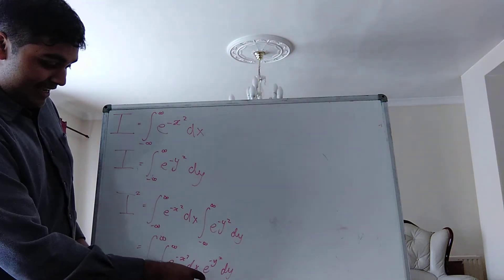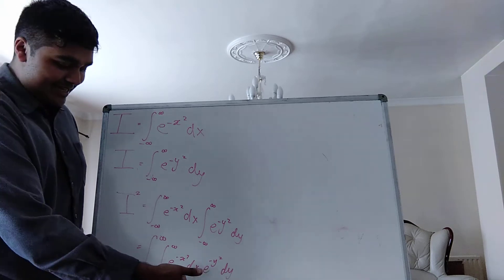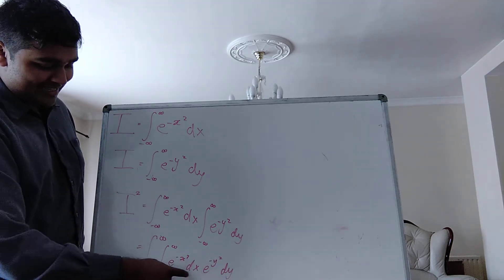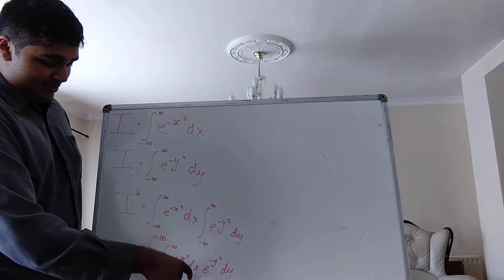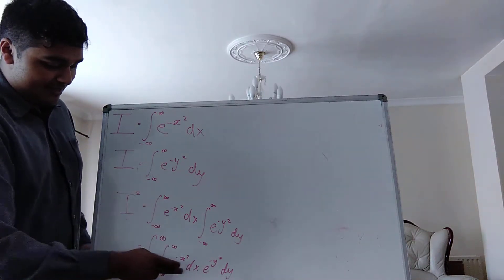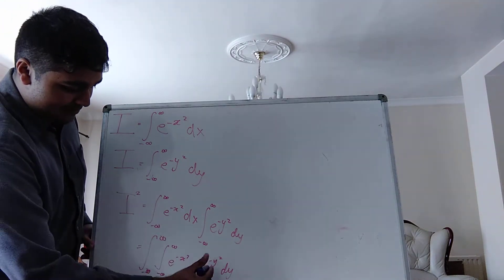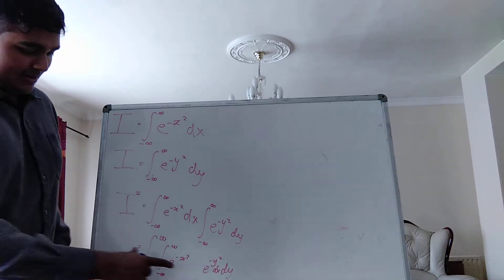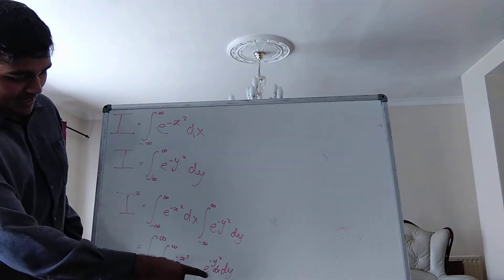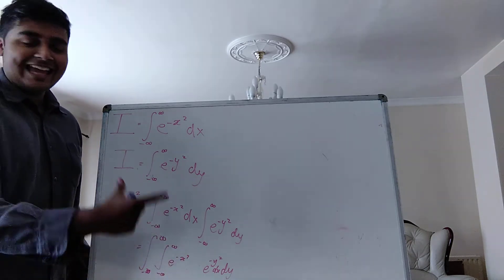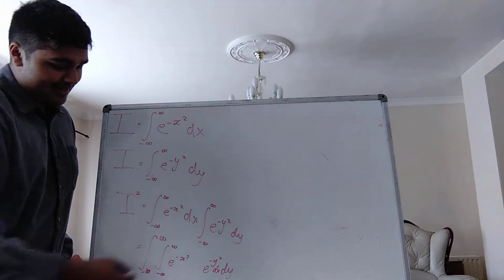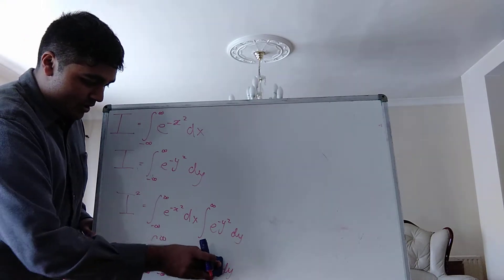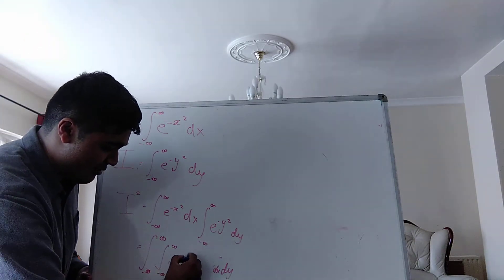And for the same reason, I can bring this e to the negative y squared into this integral. This thing is a function of y, but importantly it's independent of x, which means I can bring it into this integral. And I can clean this up and bring the two exponents together — using basic exponent rules, negative x squared and negative y squared join together, and I can write this as e to the negative quantity x squared plus y squared.